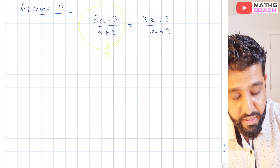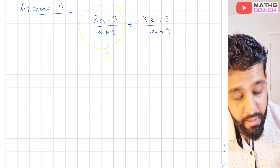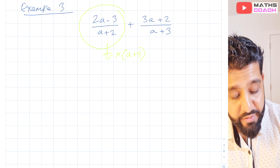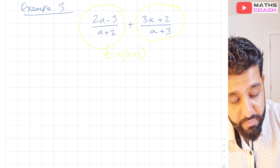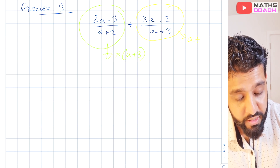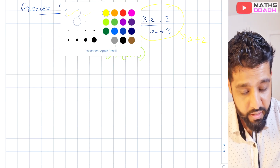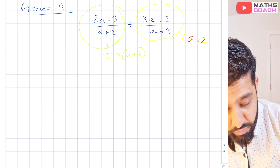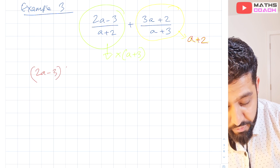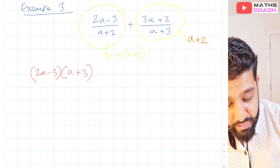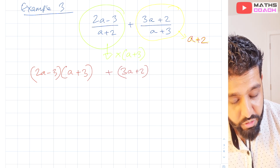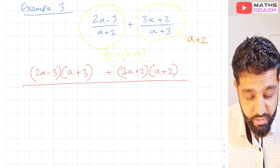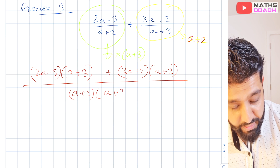We take the first fraction and multiply the numerator and denominator by (a plus 3), and we take the second fraction and multiply by the other one's denominator, which is (a plus 2). So the first fraction becomes (2a minus 3) times (a plus 3) in the numerator, and the second becomes (3a plus 2) times (a plus 2). We can place this all under one denominator: (a plus 2) times (a plus 3).